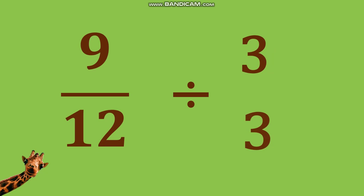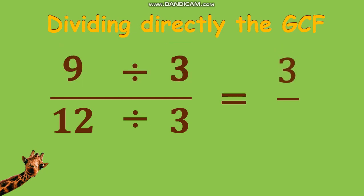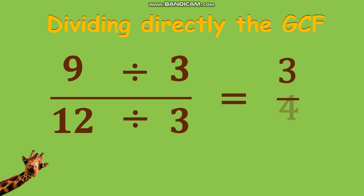Another example is 9 twelfths. Immediately finding the GCF of 9 and 12 gives you an answer of 3. Let's now divide the GCF: 9 divided by 3 equals 3, and 12 divided by 3 equals 4. 9 twelfths when reducing to lowest term is equal to 3 fourths.